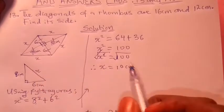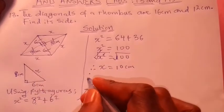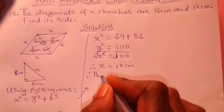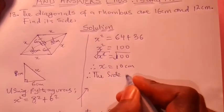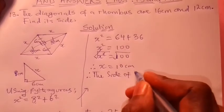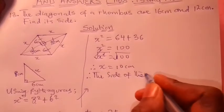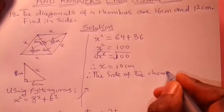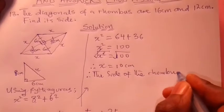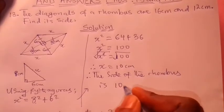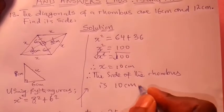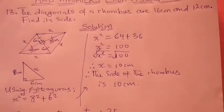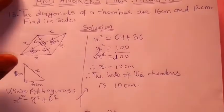Therefore, the side of the rhombus is 10 centimeters. That is how you get the answer to this first question. Now let us quickly take the second question.